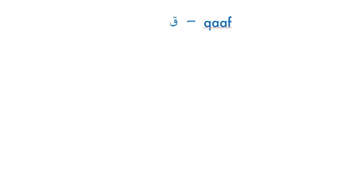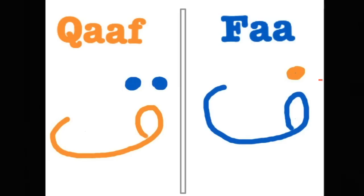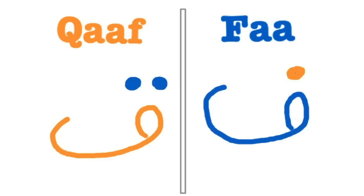Now let's look at the letter Qaf. The letter Qaf is pronounced like K in English, but it is deeper in the throat. Its basic shape is similar to the letter FA, but when it's connected to other letters, it's exactly like the letter FA but with two dots on top instead of one.